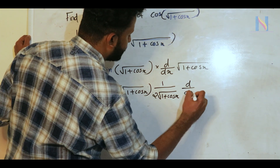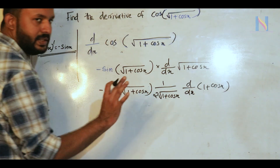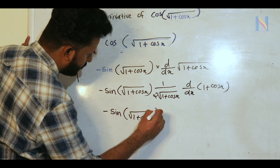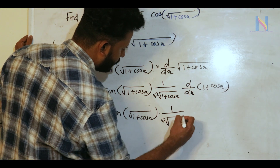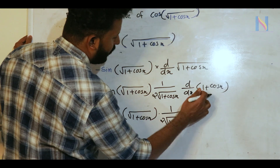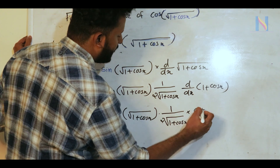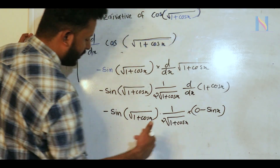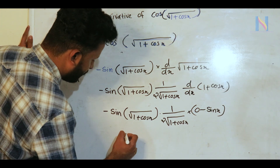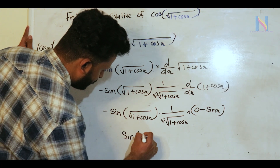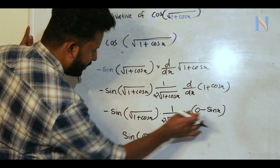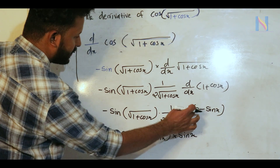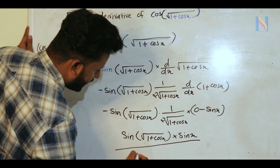Continuing with the chain rule: we differentiate √(1 + cos x) which gives 1/(2√(1 + cos x)), then multiplied by d/dx of (1 + cos x), which is -sin x. Arranging the terms, the answer is -sin(√(1 + cos x)) · (-sin x) / (2√(1 + cos x)), simplifying with cancellations.